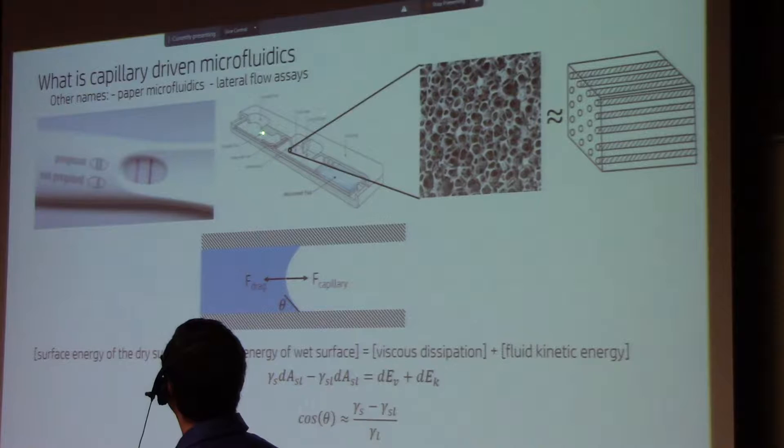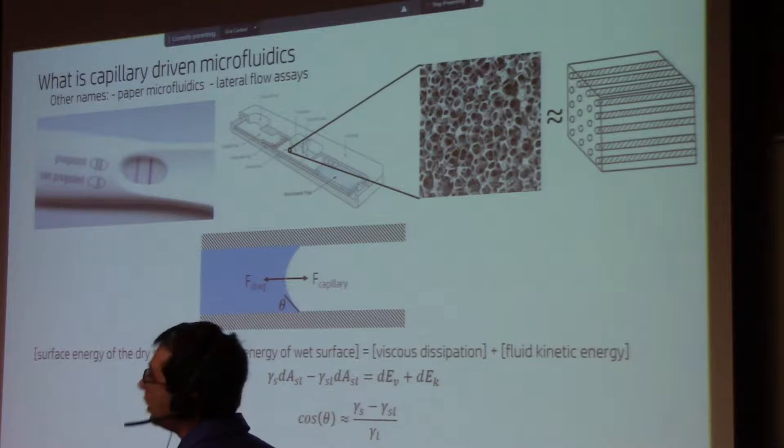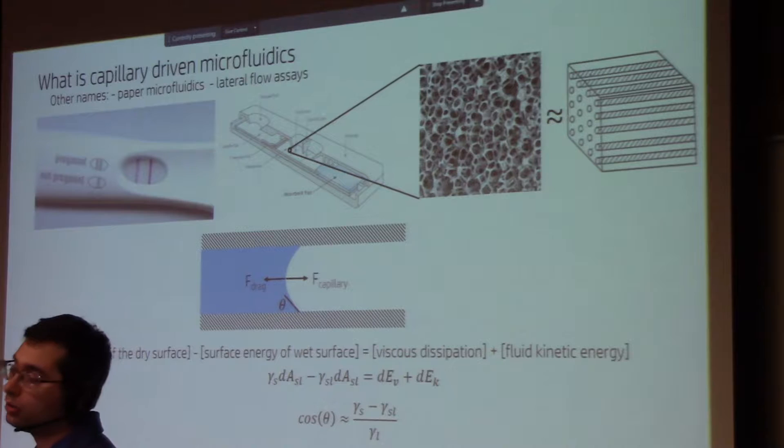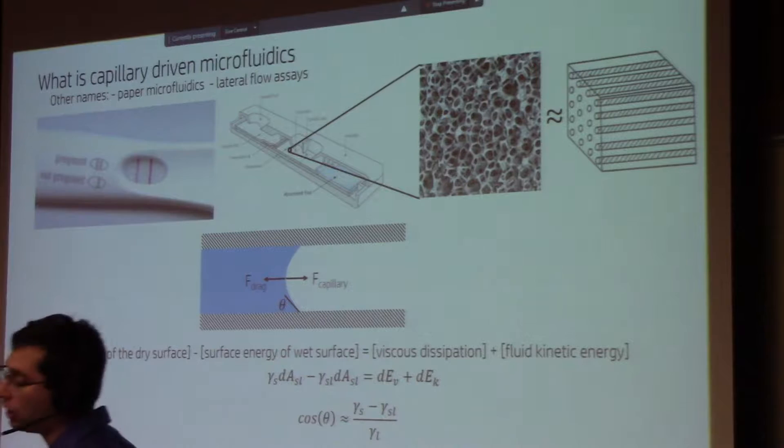Otherwise, if you do not have the analyte, these antibodies keep going and then they go and bind on the line that's past it. And they show that at least the test worked. That there is antibody there and this antibody is in a condition that it actually is able to bind and the flow works. So this is how these things work.